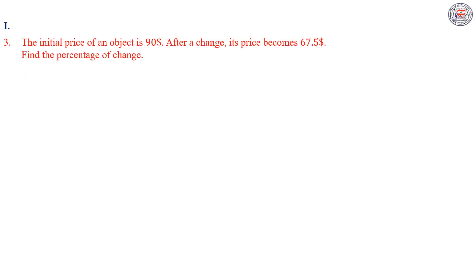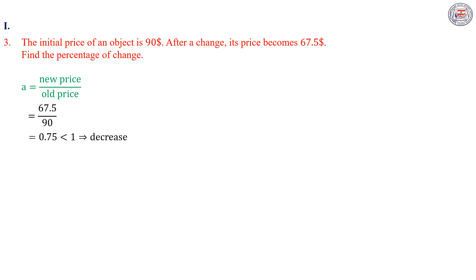In Part 3, the initial price of an object is $90. After a change, its price becomes $67.5. Find the percentage of change. The percentage of change is R. To find R, first we find A, which equals the new price over the older price. Then A is equal to 67.5 over 90, giving A equal to 0.75, which is less than 1. Then we have a decrease in price. Therefore we use the formula A equals (100 minus R) over 100.